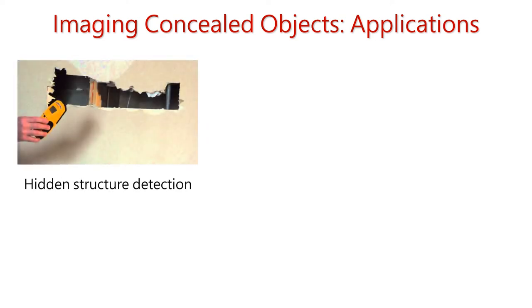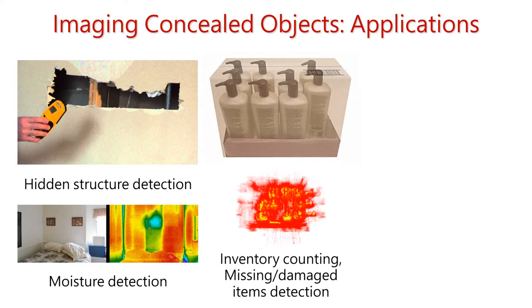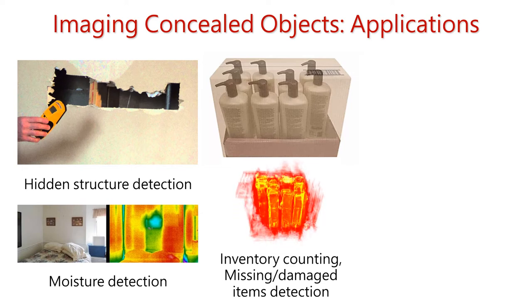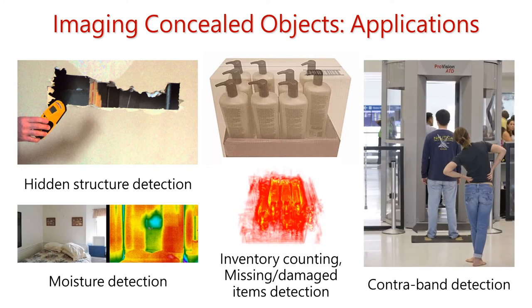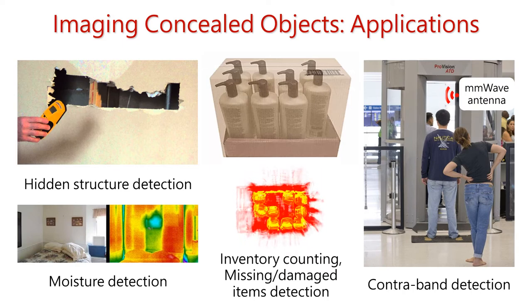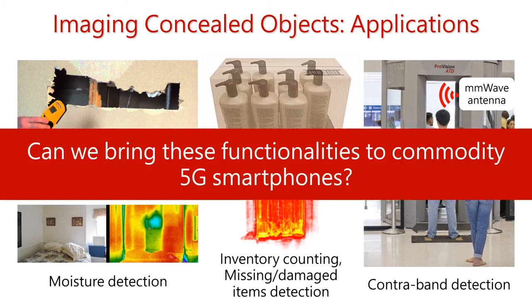There are many areas in which imaging concealed objects has shown to be useful, such as detecting hidden structures like pipes and electric wiring without drilling the wall, or detecting the moisture level of the wall that are invisible to the naked eye, or even managing inventories like counting or detecting missing and damaged items without opening the package. Almost all of you are familiar with contraband detectors at the airport. These systems use millimeter wave technology to detect hidden contraband items.